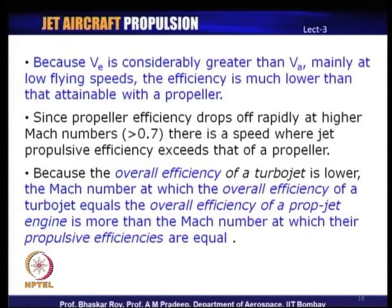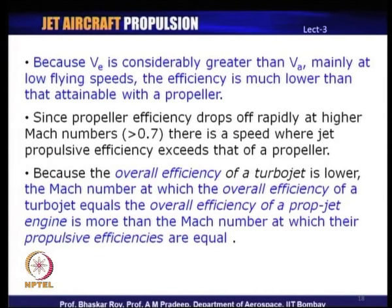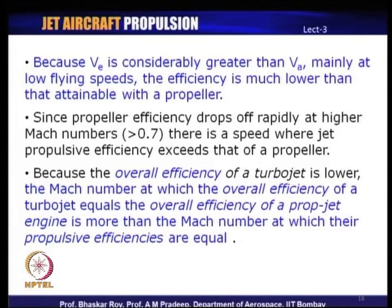Propeller efficiency starts dropping around Mach 0.5, and by Mach 0.7 propellers become really uncompetitive because the flow over the propeller goes supersonic, making the propeller less and less efficient. That is where jet engine propulsive efficiency takes over from propeller-driven devices. The Mach number at which the overall efficiency of a turbojet overtakes that of a turboprop is different from the Mach number at which their propulsive efficiencies are equal.